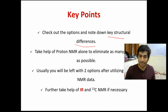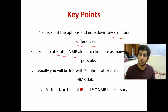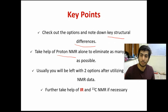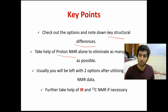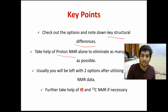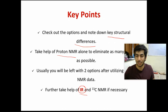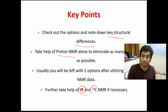Once you've noted the key structural differences, take help of proton NMR alone to eliminate as many options as possible. In most questions you can eliminate at least two options using proton NMR data — in fact, the question will often get solved with proton NMR alone, even if IR or 13C data is also given. Only if it's not getting solved should you go to IR or 13C data. For exam questions, IR data gives quite a lot of information about the molecule — more than 13C, though in research the reverse is true.